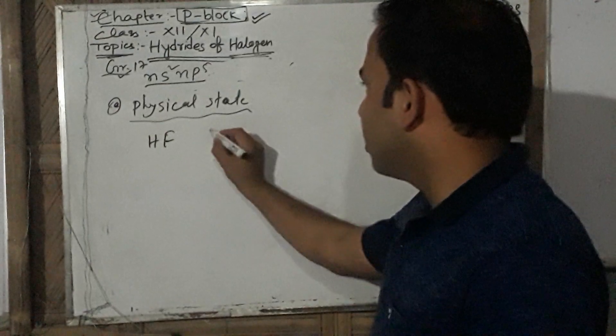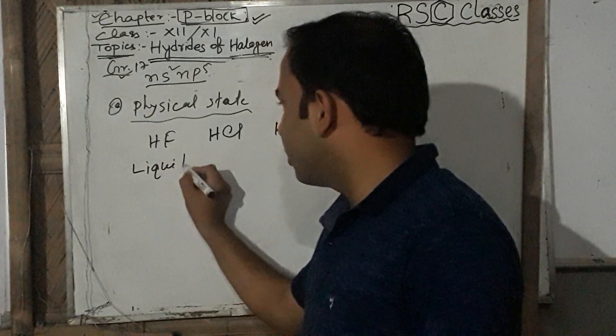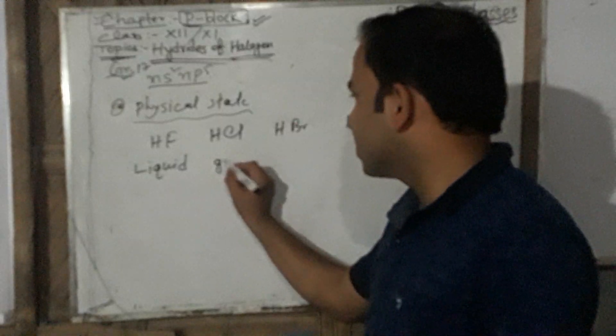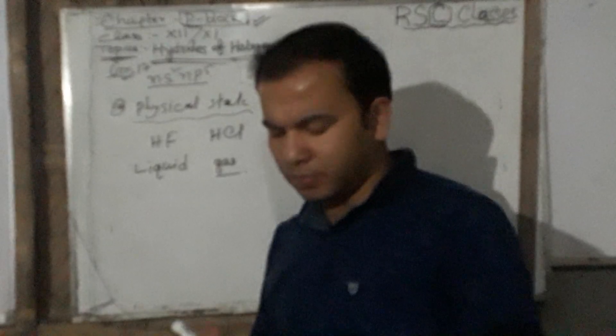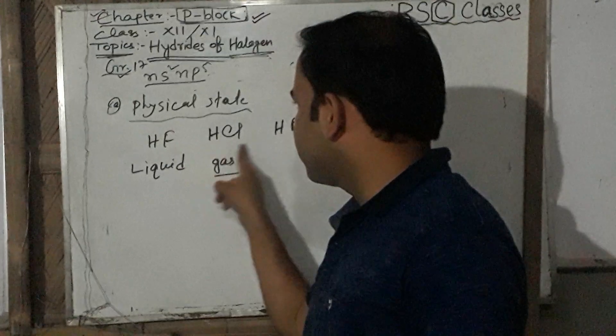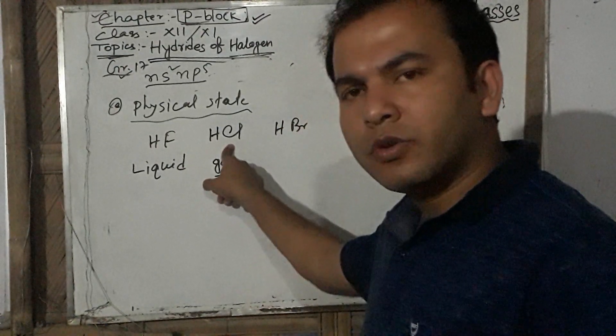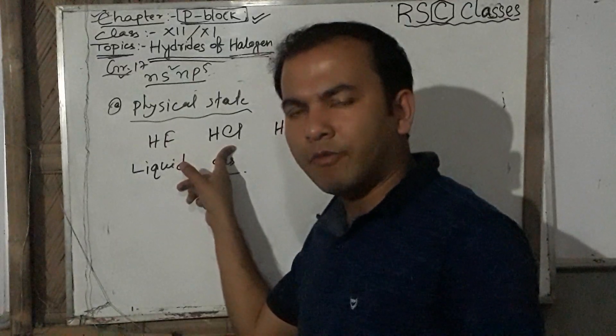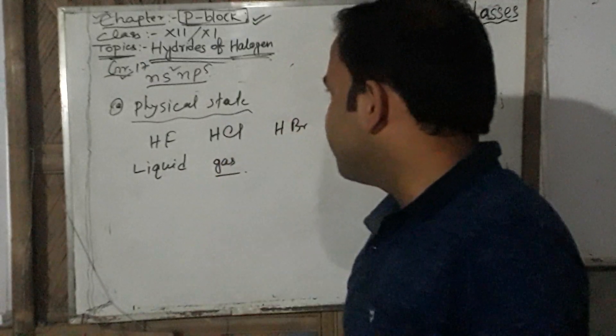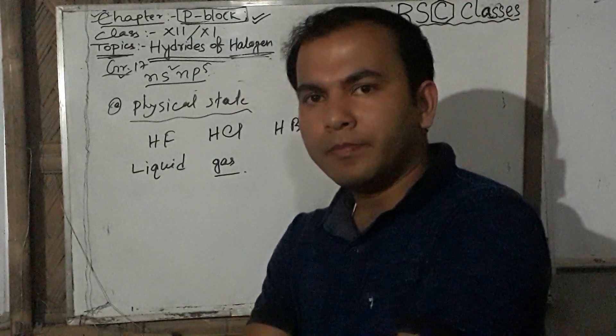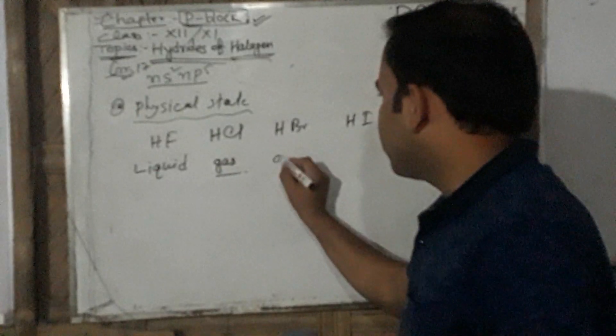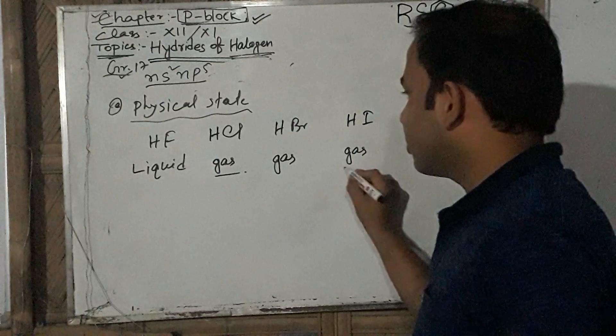HF (hydrogen fluoride) is a liquid, while HCl (hydrogen chloride), HBr (hydrogen bromide), and HI (hydrogen iodide) are all gases at room temperature. You may have seen HCl gas in the laboratory — it gives white fumes.